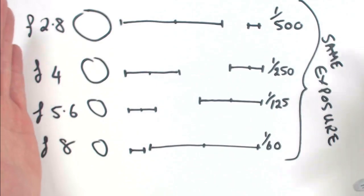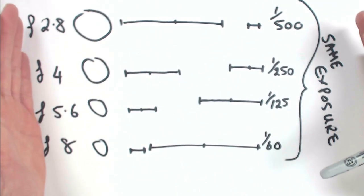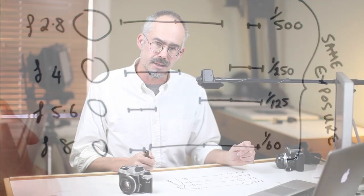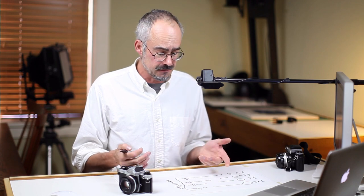Because it's easy to think once you've understood this diagram that, well, that's great. Whenever I set an aperture of F4, I just set a shutter speed of 1/250th of a second and likewise with the other combinations.